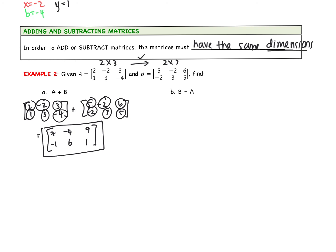Part B we're subtracting. So we're going to take B, which is five, negative two, six, negative two, three, five. We are going to subtract A. It works exactly the same as adding. You're going to subtract the corresponding elements. So we would do five minus two gives us three. Negative two subtract negative two is zero. Six minus three is three. Next row, we would do negative two minus one. So that's negative three. Three minus three is zero. And five subtract negative four is nine.